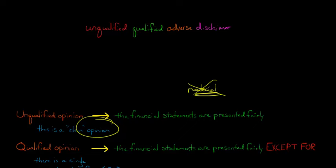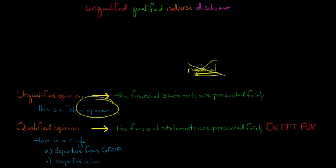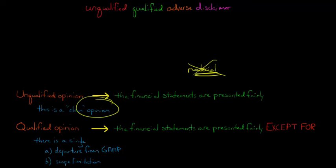However, there could be different types of opinions — it's not always going to be an unqualified opinion. A qualified opinion is saying, from the perspective of the auditor, we have examined the financial statements and they are presented fairly, they are presented in accordance with GAAP, except for one thing. There's a single departure from GAAP — where maybe that company didn't account for their inventory in accordance with GAAP. So they say everything was fine with the financial statements, except for the way they did their inventory, and they would mention that.